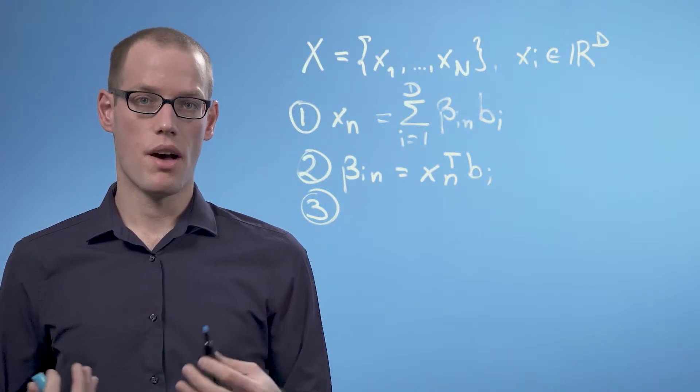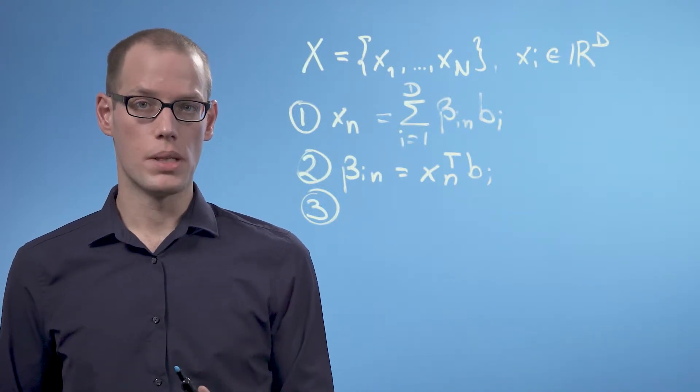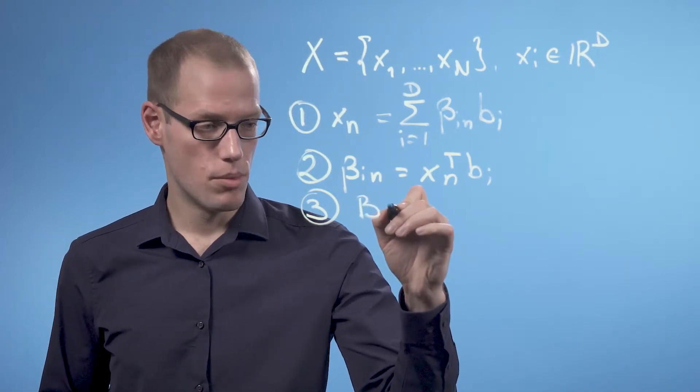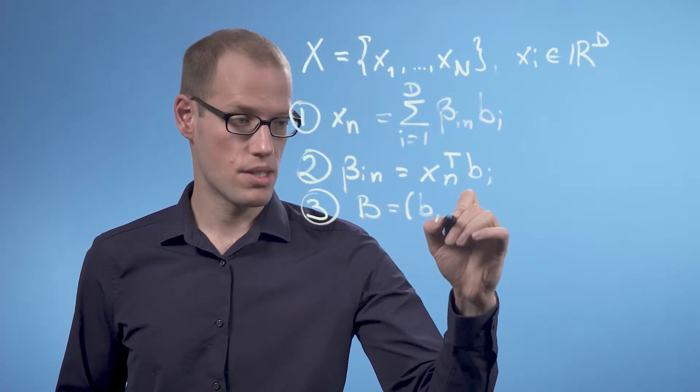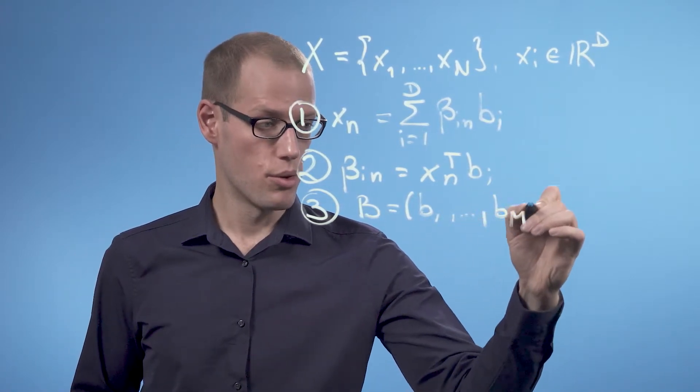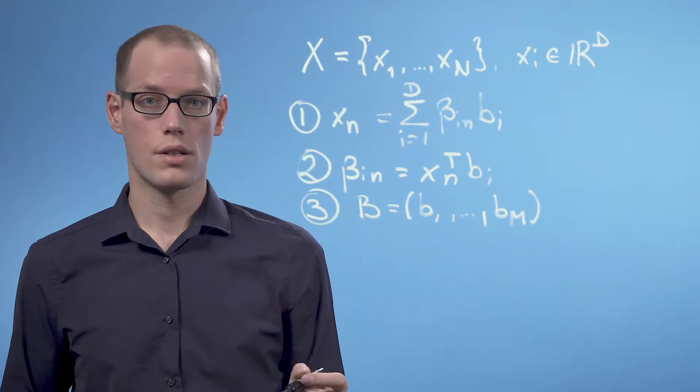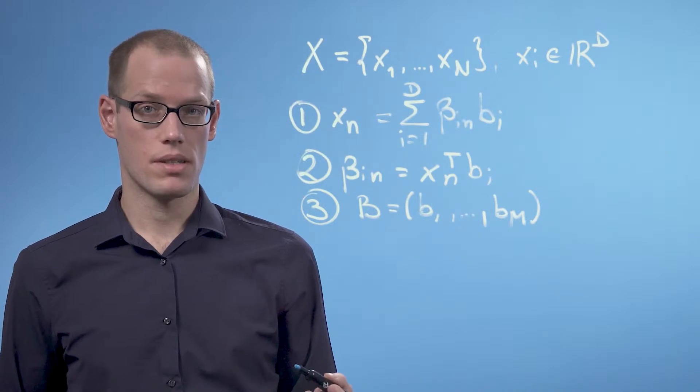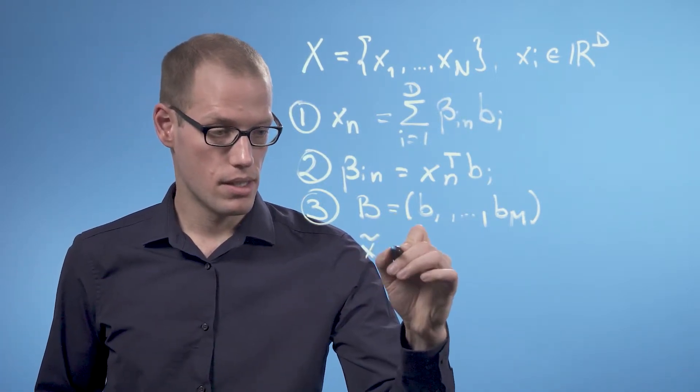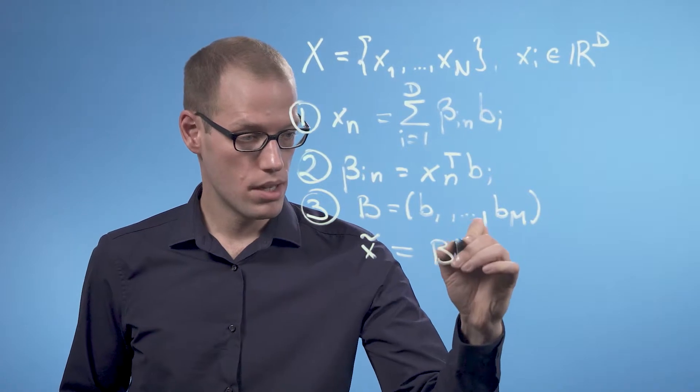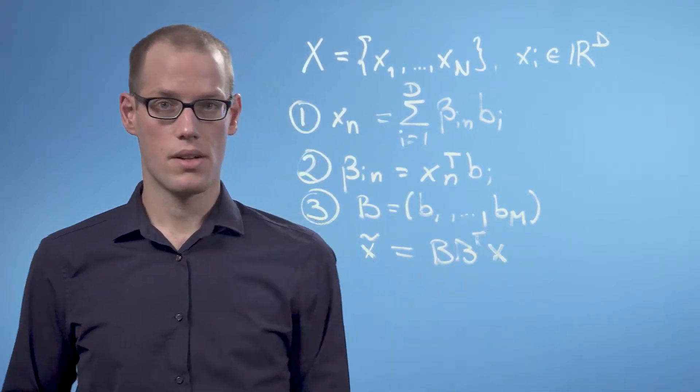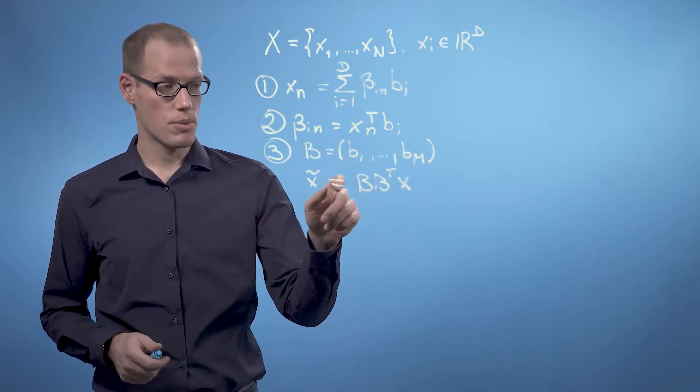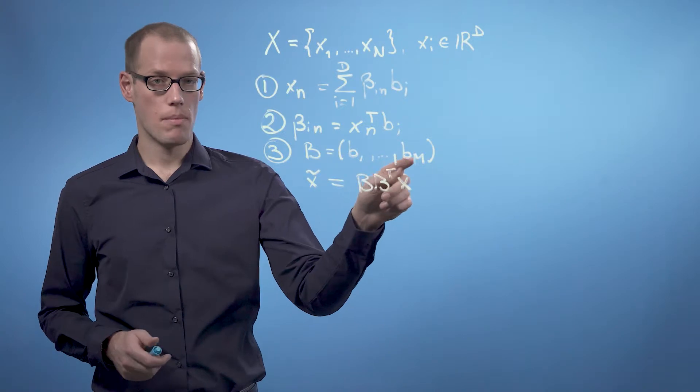The third property is that if we have an orthonormal basis b_1 to b_m of R^d and we define B to be the matrix that consists of these orthonormal basis vectors, then the projection of X onto the subspace we can write as X tilde is B times B transpose times X. That means X tilde is the orthogonal projection of X onto the subspace spanned by the m basis vectors.